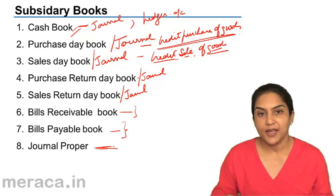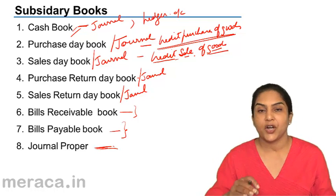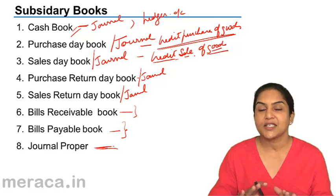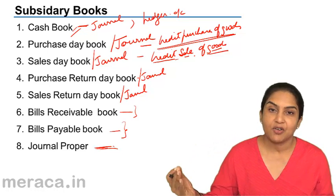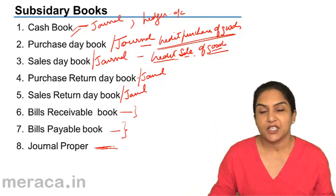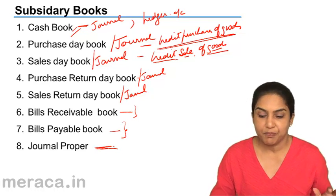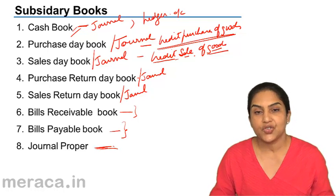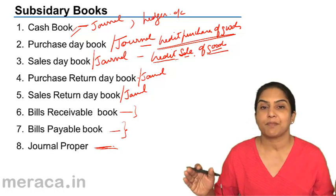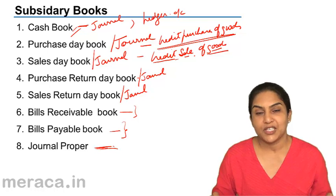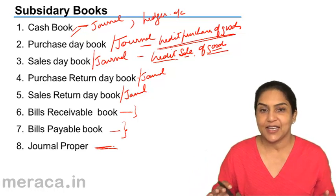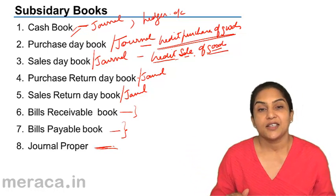Let us see the formats and how we record in these day books and how we post from them to the ledger accounts. These are called subsidiary books because the principal books of account — the ledger accounts — are prepared on the basis of them. The subsidiary books are: purchase day book, sales day book, purchase return day book, sales return day book, bills receivable book, bills payable book, and journal proper. The cash book is not really a subsidiary book — it is a part of the main ledger account and therefore a principal book of account. Cash book is both a journal and a ledger. We will discuss the cash book in the next module and go through the other subsidiary books.